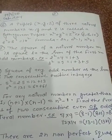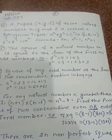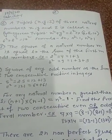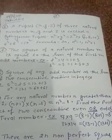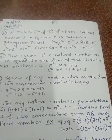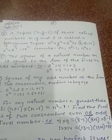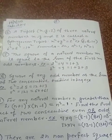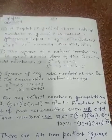Now, property number 6. A triplet (x, y, z) of three natural numbers x, y, and z is called a Pythagorean triplet. Here we use the formula x² + y² = z². For example, 6, 8, 10: 6² + 8² = 10².